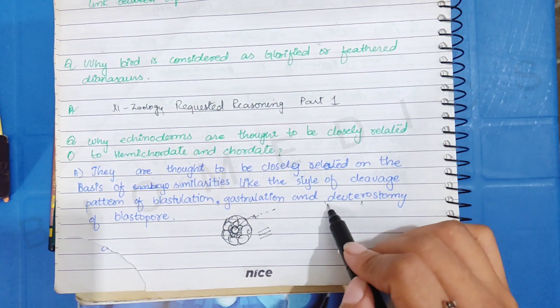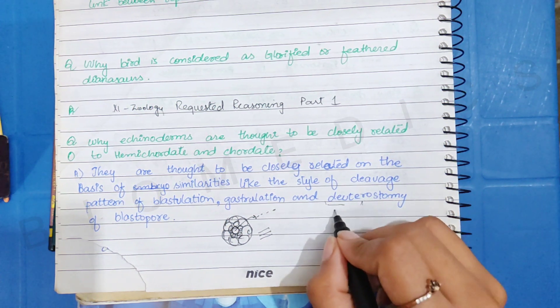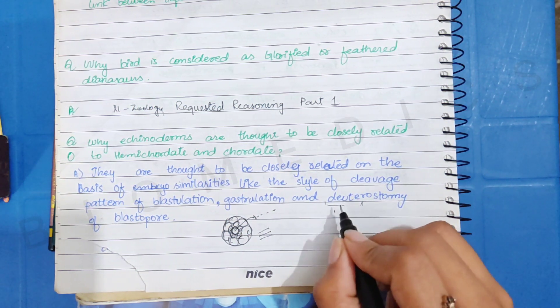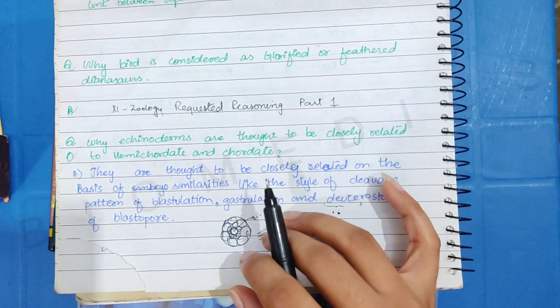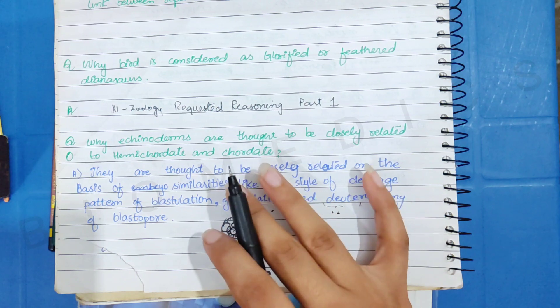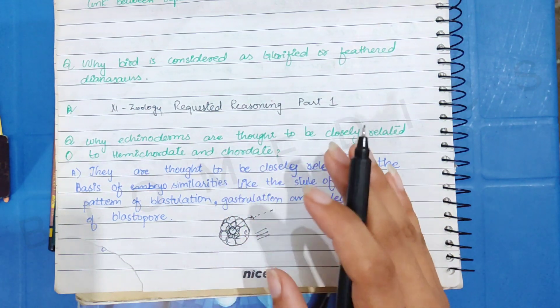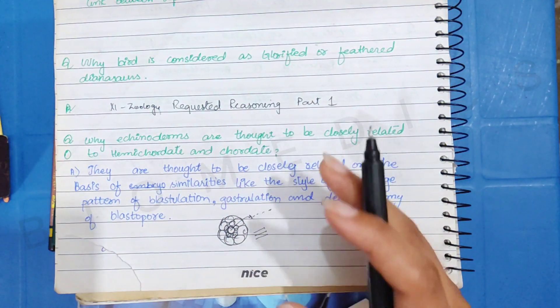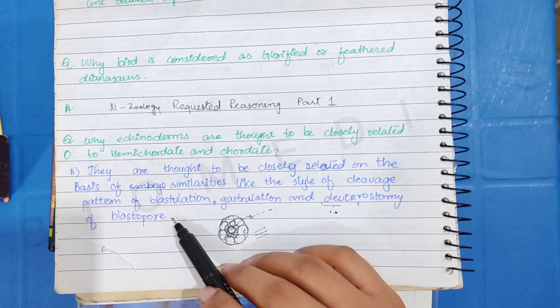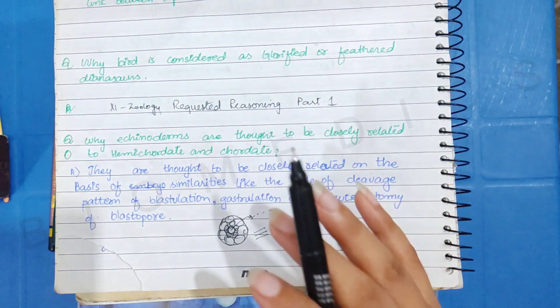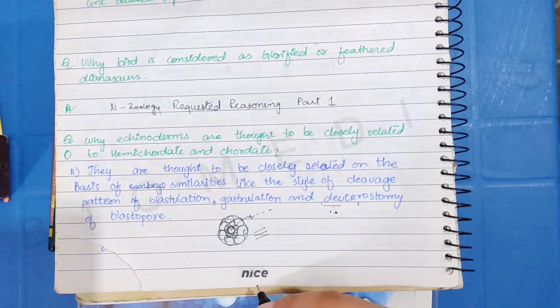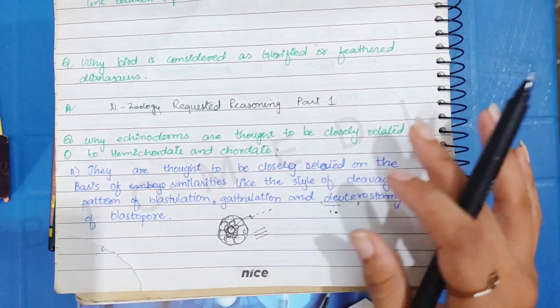And deuterostomy is called, the first opening of the body is called anus, and the second opening is called mouth. And these are all the things, these are all the same. These hemichordates, chordates, and echinoderms, we call it closely related. Which are tornaria and bipinnaria larvae, they also get more morphological characteristics, so you can add that too.